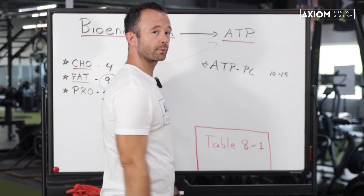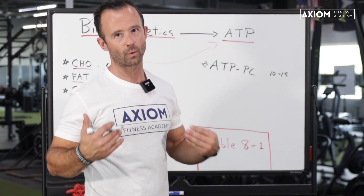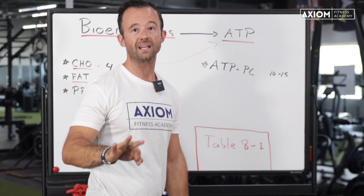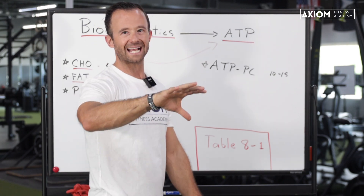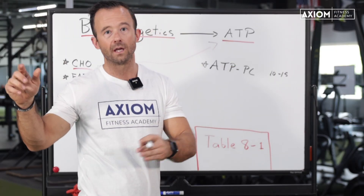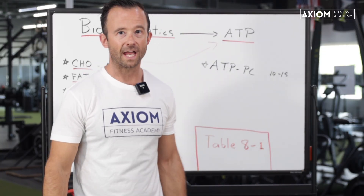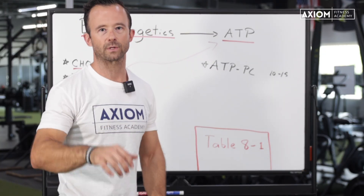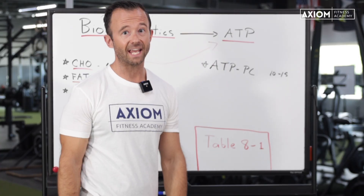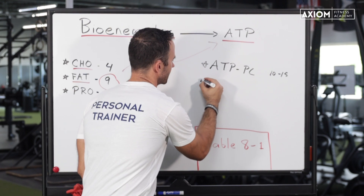The ATP-PC system gives out pretty quickly. The question becomes: what happens next — does our body just run out of fuel? This thing is way too smart for that. A key thing inside of understanding our three energy systems is knowing they're all three always working together. It really just has to do with percentages — is most of my fuel right now coming from this one, that one, or that one? They're all three working together because we don't want a light switch to go off and suddenly run out of fuel. It's a continuous process.